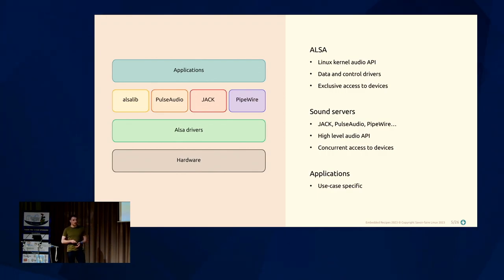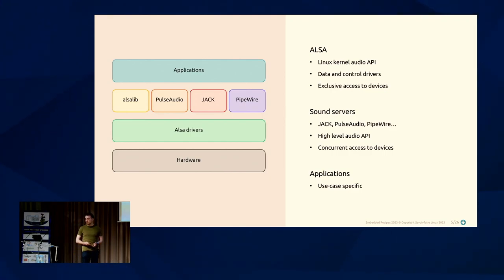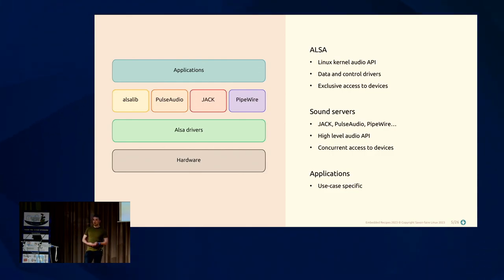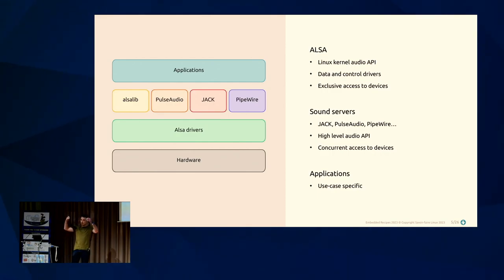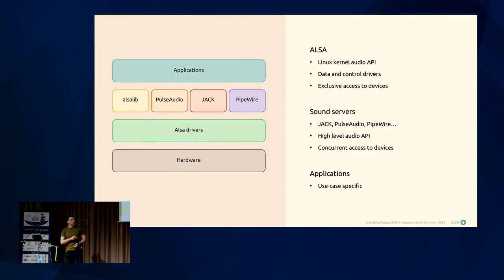Like every device on Linux, only one application can access it at a time, but sometimes you may want two applications playing sound simultaneously — for example, listening to music on Spotify while receiving a call notification. You need a sound server: an application that proxies higher-level applications to a single audio interface, merges sounds, routes them to other interfaces, and allows concurrent access to devices.